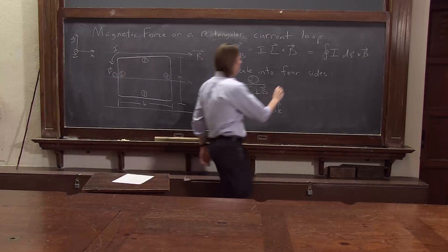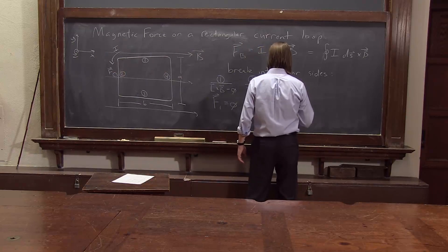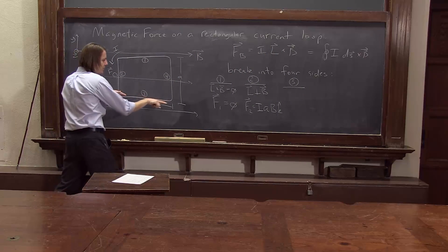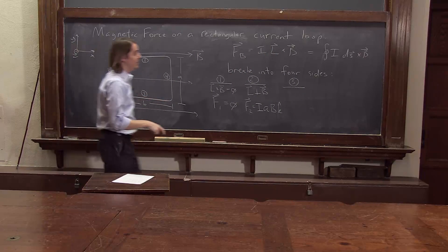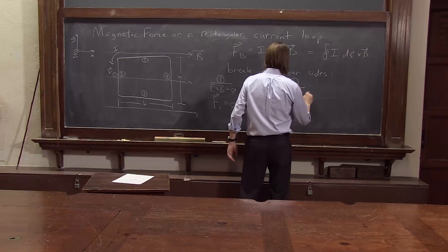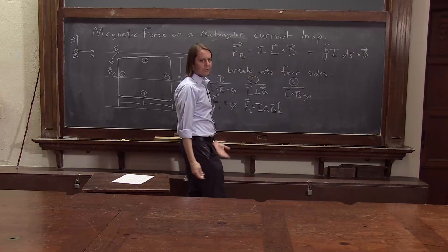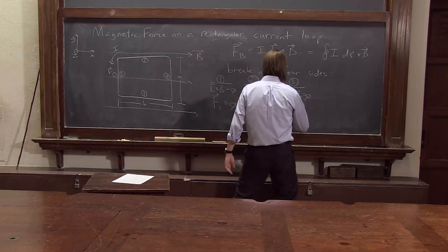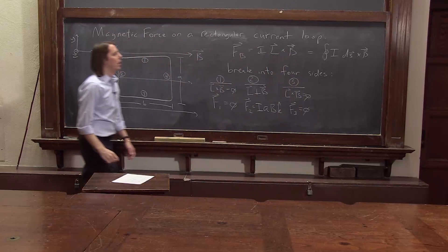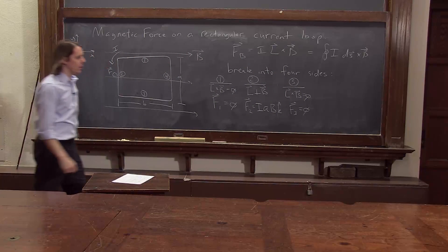F_3. For F_3, we have the dS's add up for a length vector going this way, the same direction as the B field. So L cross B is zero, because they are parallel. So F_3 is zero. So, okay, almost done.